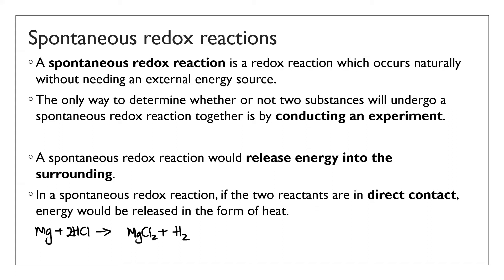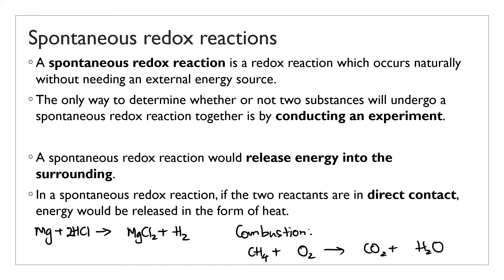Another example of a spontaneous redox reaction that releases heat would be any combustion reaction. All combustion reactions are redox, and obviously heat is released because that's the primary reason why we burn fuels. For example, the combustion of methane gas — used for cooking or heating — produces carbon dioxide and steam. It's definitely a redox reaction because oxygen has a decrease in oxidation number from 0 to -2, and carbon has gone from -4 to +4, and it releases heat.